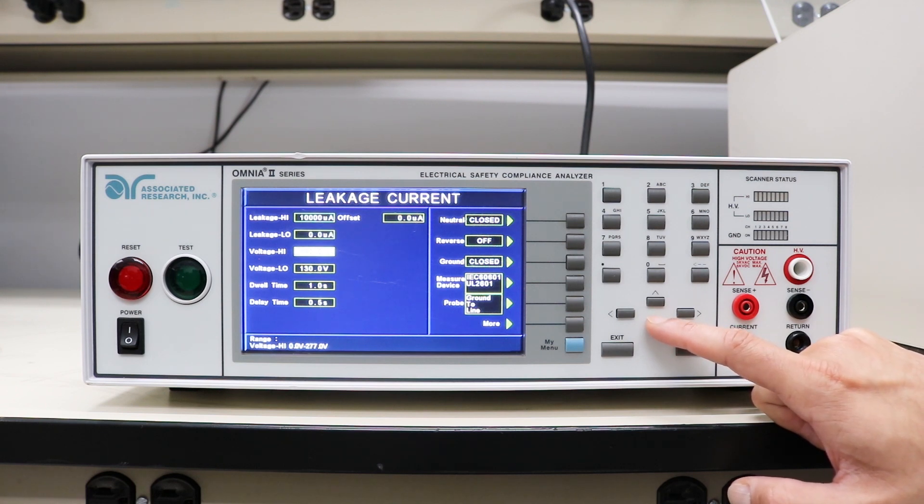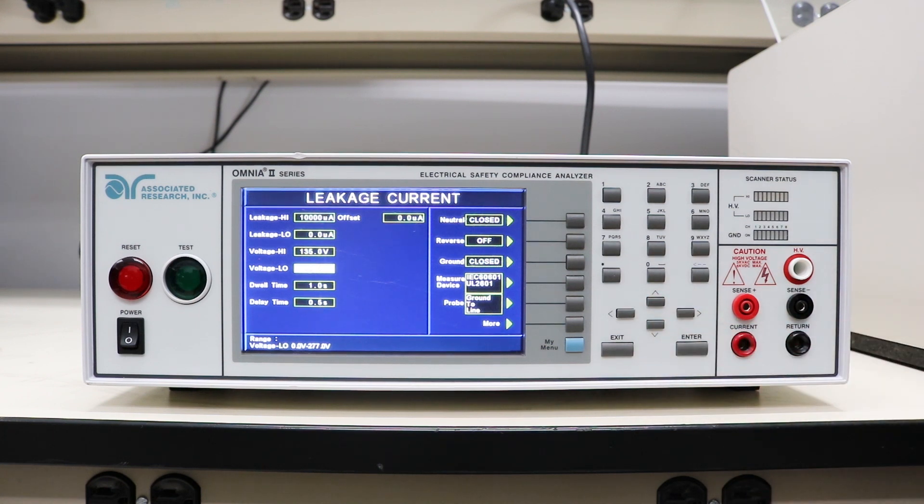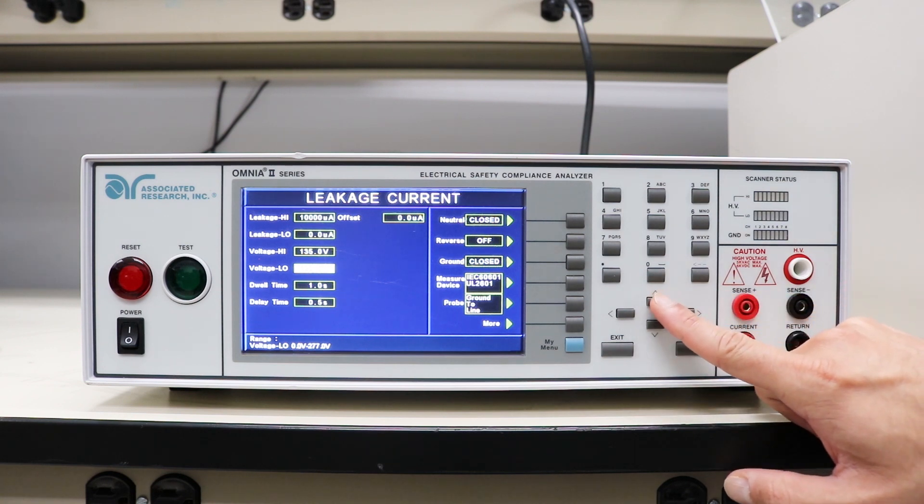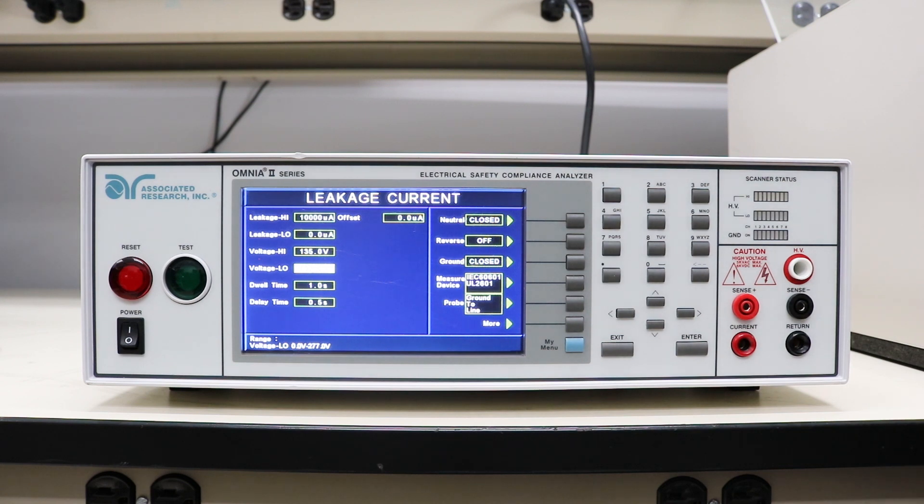Then we have voltage high and voltage low. We will be powering up our device using a programmable AC source that's built into this safety analyzer, and it's set to output 132 volts, which is 110 percent of the rated line voltage of this device. We have our voltage high at 135 and voltage low at 130 to make sure that the voltage does not change too much.